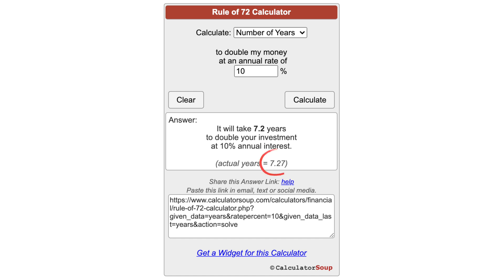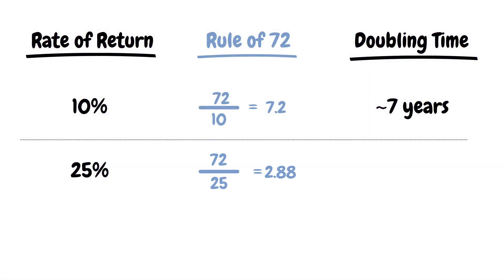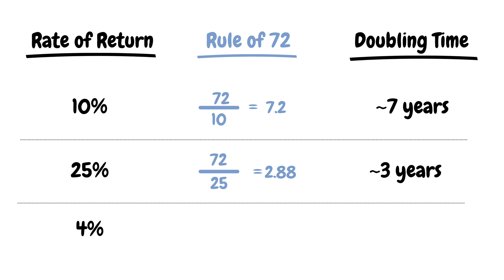This is pretty close to the result you would get using the actual compound interest formula — the mathematically correct answer is 7.27 years. If you want to know how long it will take to double your money at a 25 percent rate of return, divide 72 by 25 and you get a ballpark estimate of about 3 years, or more precisely 2.88 years. An investment with a rate of return of 4 percent will double in 18 years — 72 divided by 4 is 18.